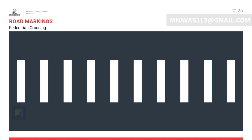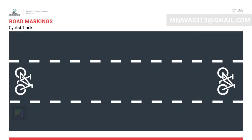Road markings include the give way line and the pedestrian crossing marking. Road traffic signs could sometimes be hidden or out of sight, but road markings are usually clearly visible to the driver. Road markings clarify rules and regulations, separate lanes, cyclist tracks, and pedestrian crossings, and provide some form of prohibition.